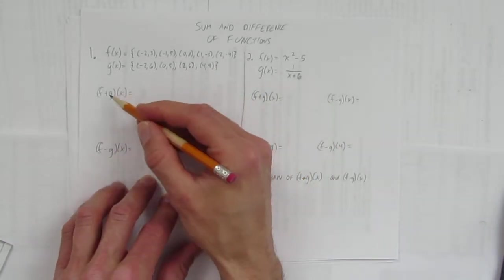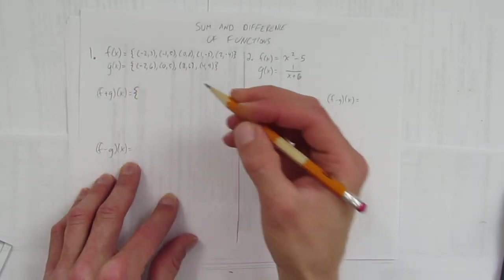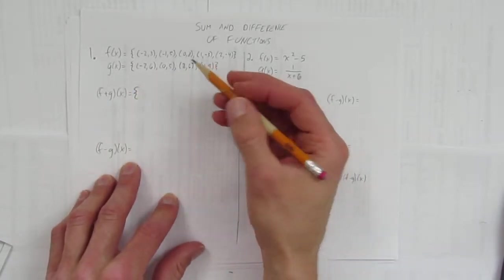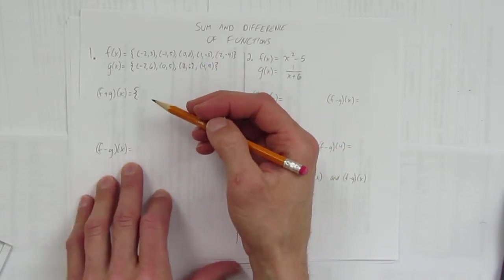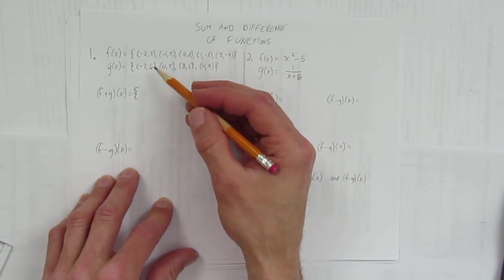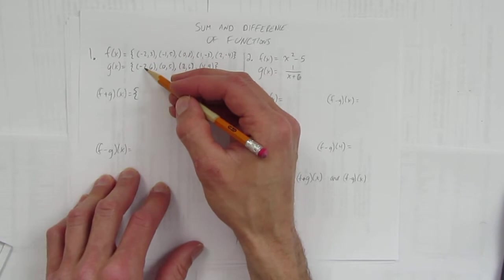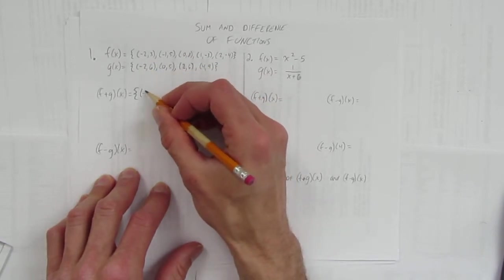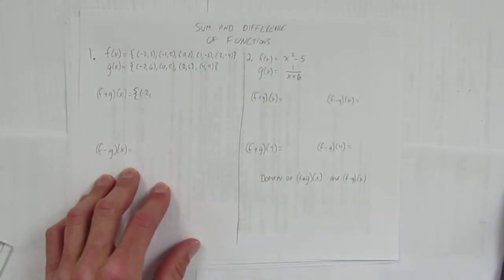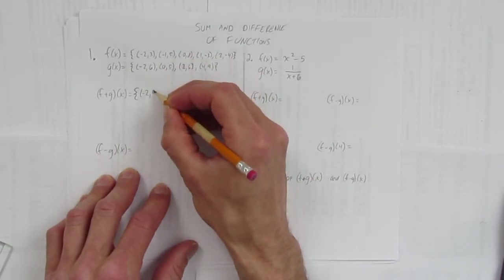And so it asks us to find (f+g)(x). When you're adding two functions together and they're points, you only add the points that share an x value. For example, they share the x value negative 2. I'll write down negative 2 as one of my points, and then I just literally add the y values. What's 3 plus 6? 9.